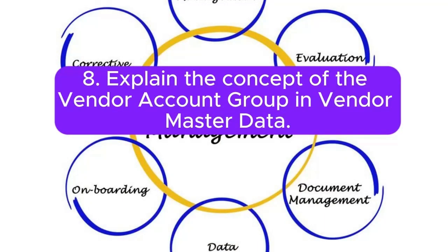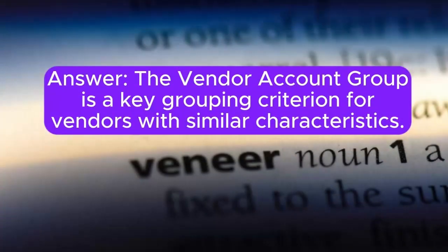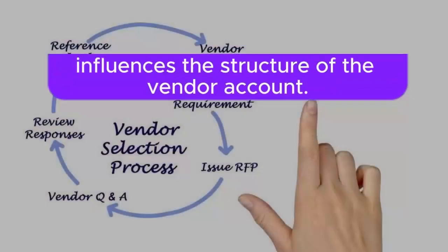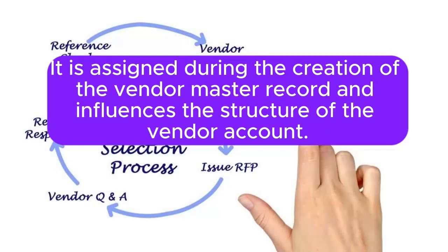8. Explain the concept of the vendor account group in Vendor Master Data. Answer: The vendor account group is a key grouping criterion for vendors with similar characteristics. It is assigned during the creation of the Vendor Master record and influences the structure of the vendor account.